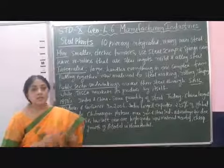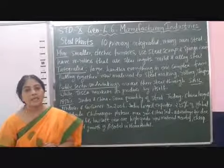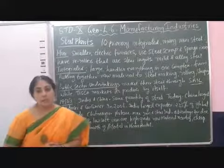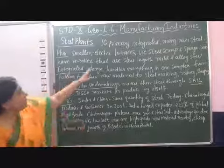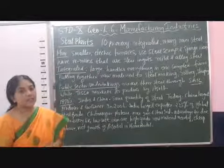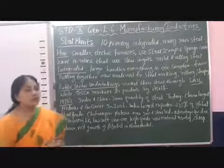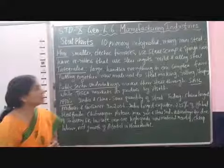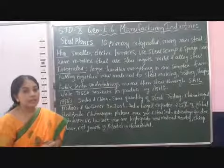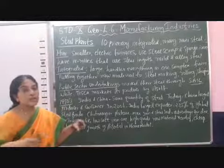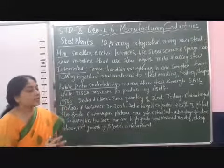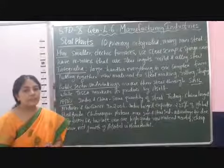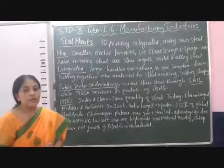Mini steel plants are small steel plants which use scrap materials as their raw materials. They use electric furnaces for making steel and they also use sponge iron for making steel. They have re-rollers that use steel ingots — long pieces of steel — and they produce only mild and alloy steel of given specification. They don't make all types of steels.